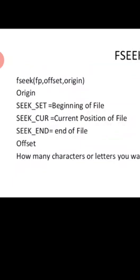There are three possibilities for origin: we can start from the beginning of the file, the current position, or the end of file. If we want to go to the beginning of the file we write SEEK_SET. SEEK_CUR is used for the current position of the file. SEEK_END is used to move towards the end of the file. One of these three must be written as the last part of the fseek function. fp always refers to the file pointer belonging to the particular file in which we want to seek.